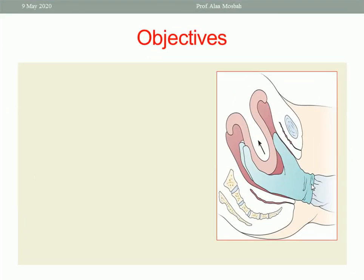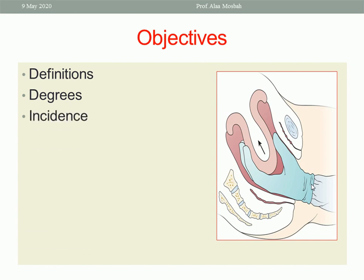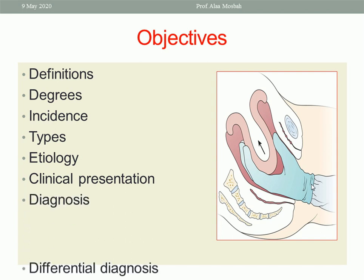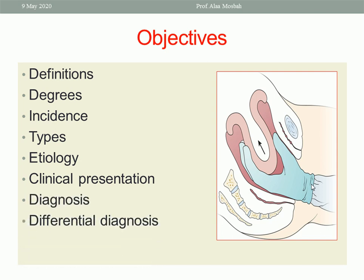What we want to discuss today: the definition, the degrees of uterine inversion, its incidence, its types — whether acute, sub-acute, or chronic — etiology, clinical presentation for every type, diagnosis, differential diagnosis, and lastly treatment.